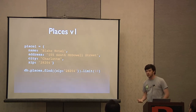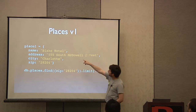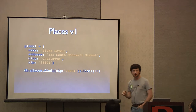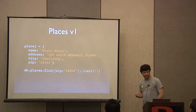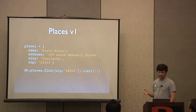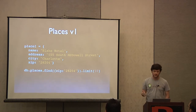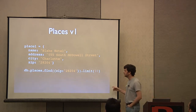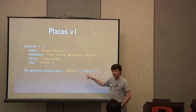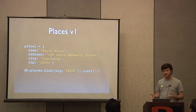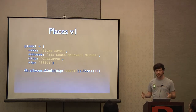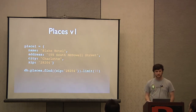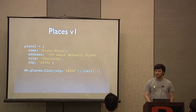Let's look at designing the data model for our places collection. The first idea might be to have a place with name, address, city, and zip — then find places by zip code and limit to 10 documents. There are several problems with this: there are probably a lot of things in zip code 28204 in Charlotte, so we'd get a ton of documents. The query syntax for MongoDB is you send in a JSON document — it's kind of a query by example. It is technically another query language you need to learn.